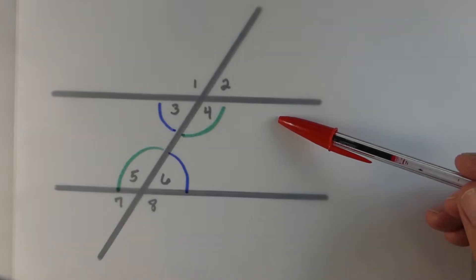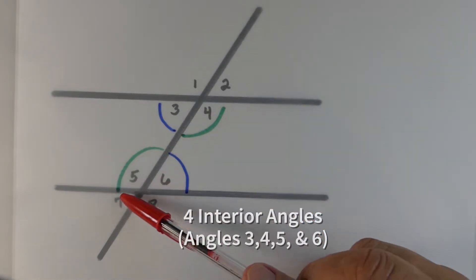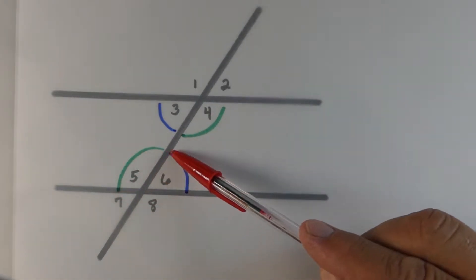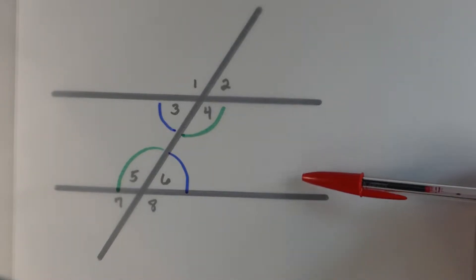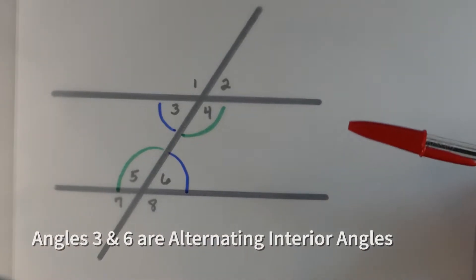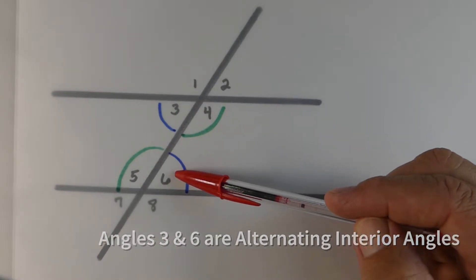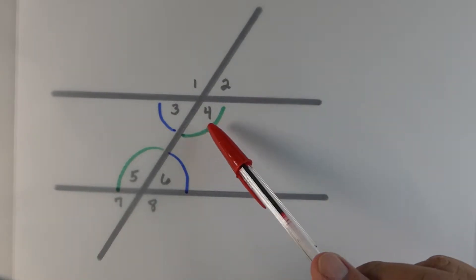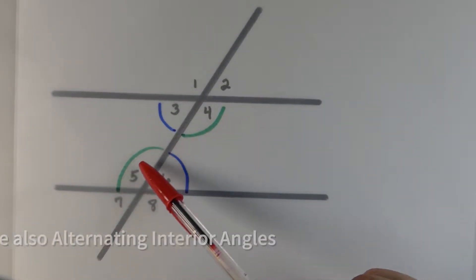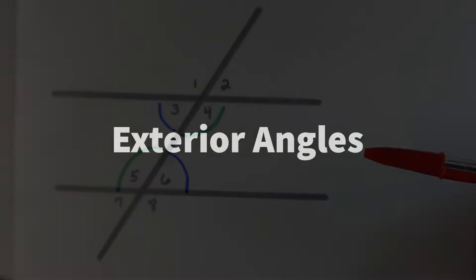The first angles we're going to look at are the interior angles. Angles three, four, five, and six are the interior angles, and they're basically between these two parallel lines. Angle three and six are what we call alternating interior angles, and they're going to have the same measurement. Four and five are also alternating interior, and they'll have the same measure.